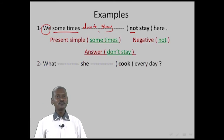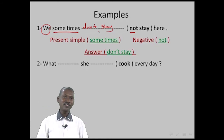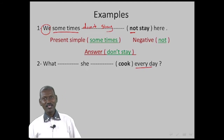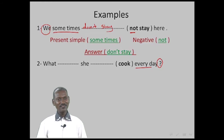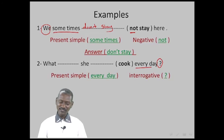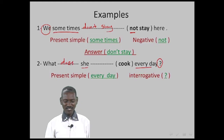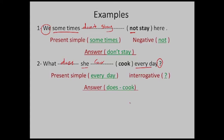Example two: 'What you cook every day?' It is Present Simple because of 'every day', and interrogative because of the question mark. The subject is 'she'. With 'she' we put 'does' before the subject and the verb after it. So the answer is: 'What does she cook every day?'